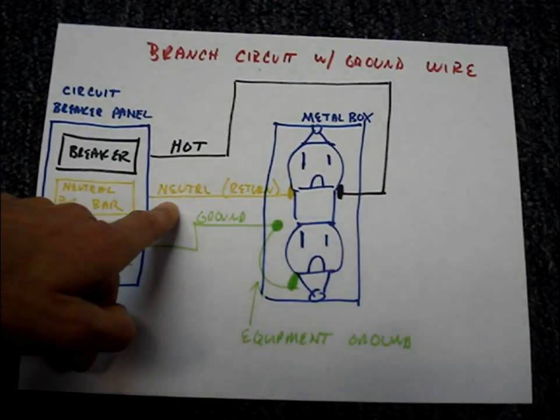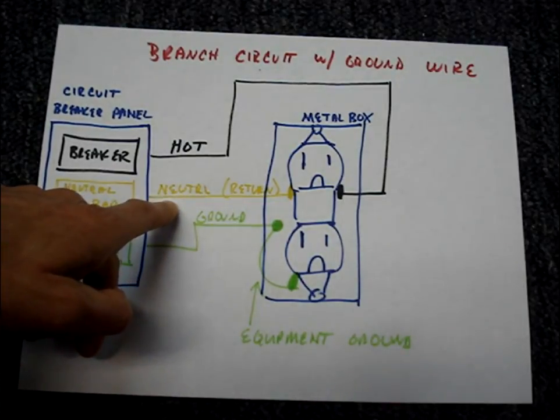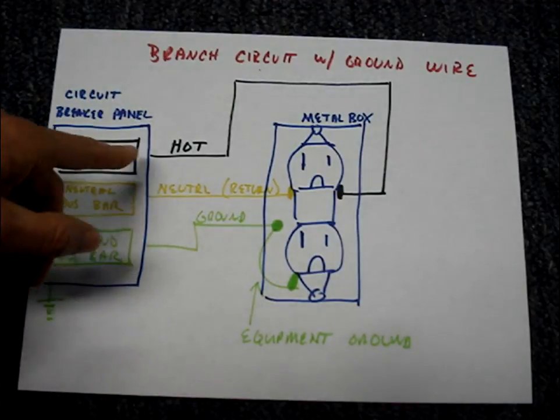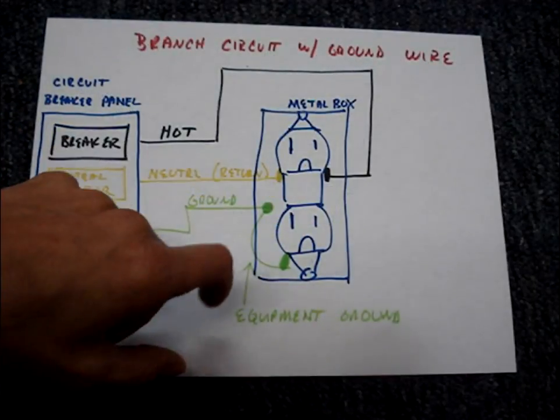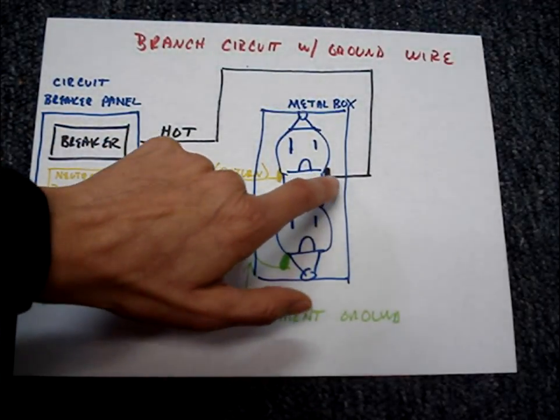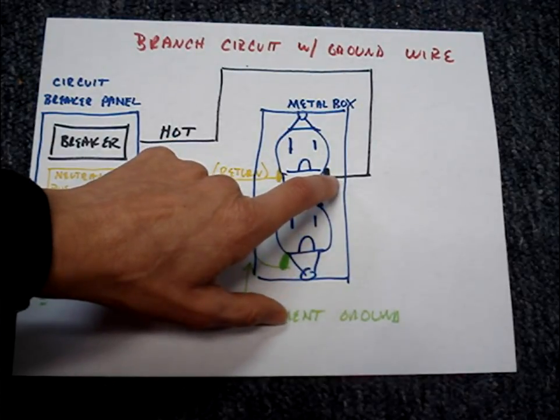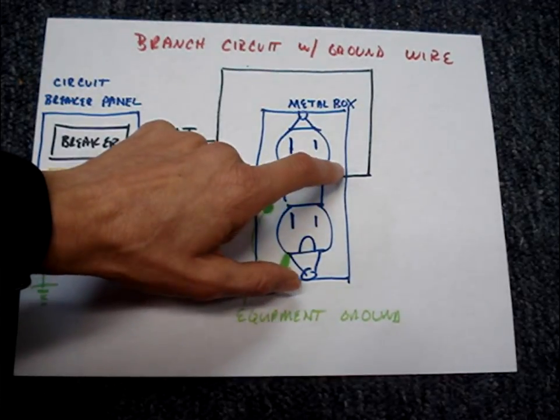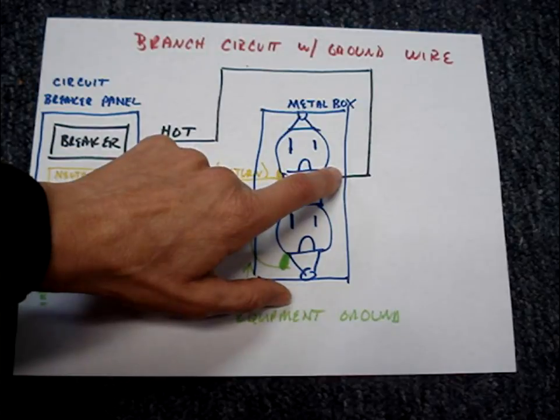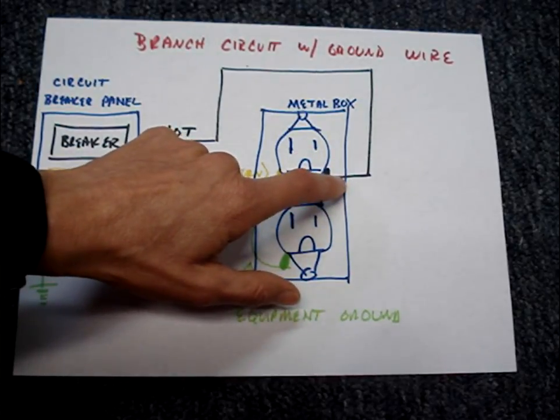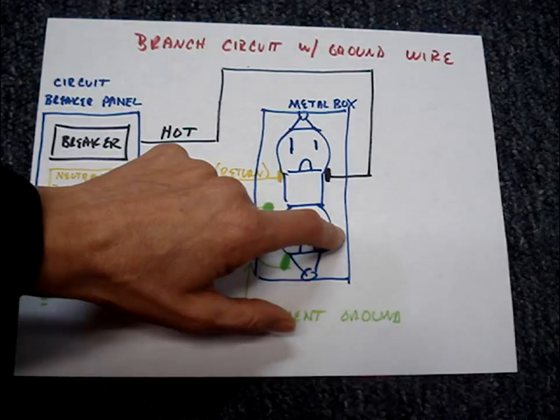If there was some sort of damage to this hot wire and the metal conductor was laying against our metal box, the box would become energized.